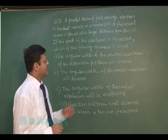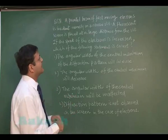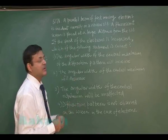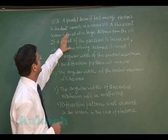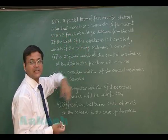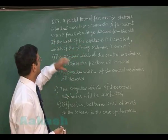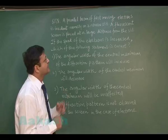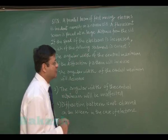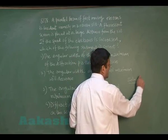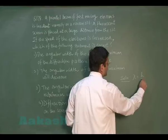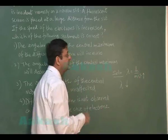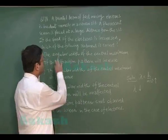Question 178 is based on diffraction of electrons, related to Bragg's X-ray diffraction law. A parallel beam of fast-moving electrons is incident normally on a narrow slit, and a fluorescent screen is placed at a large distance. If the speed of the electrons is increased, by de Broglie's relation λ = h/mv, the wavelength decreases.